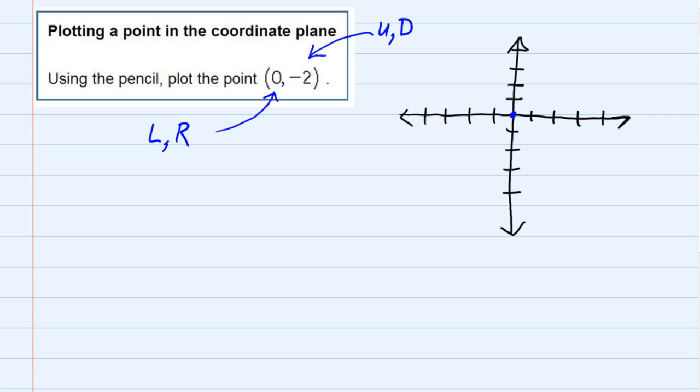The left-right portion says that we need to move 0 to the left and right, so that's nice. We don't have to move either direction. If it were positive, I would move to the right. If it were negative, I would move to the left, but since it's 0, it doesn't move at all.